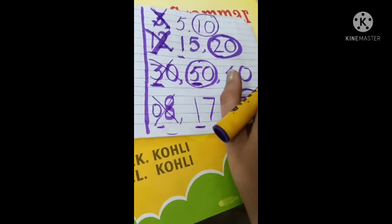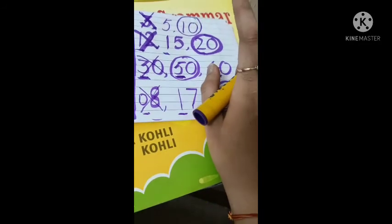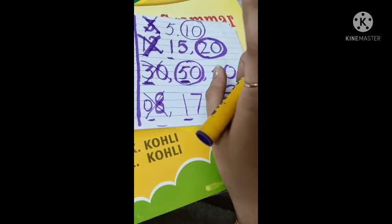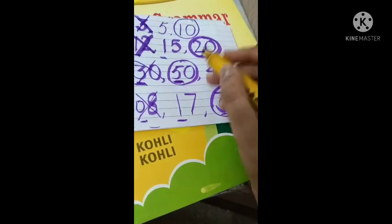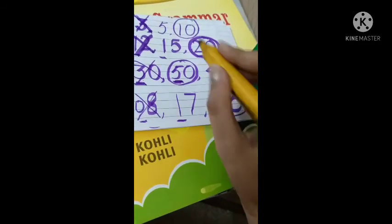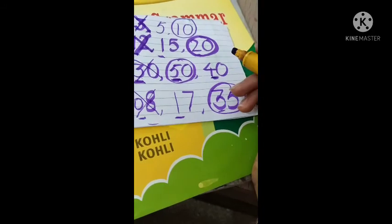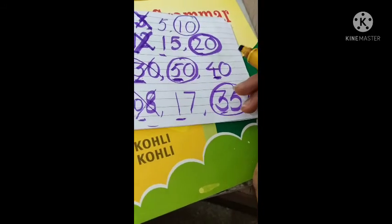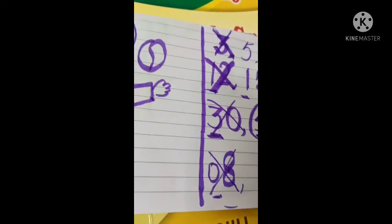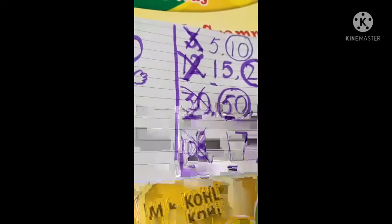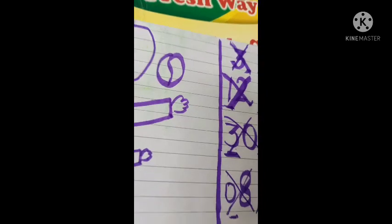Or sabse small kya hai? Or jiska naihi hooga voh smallest number. Aisai hi aapko page number 78 pe biggest number me yellow color karna hai or smallest number me pink color karna hai.